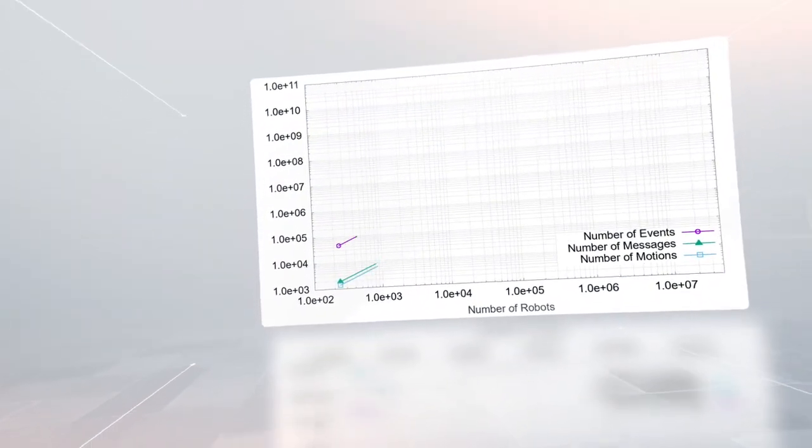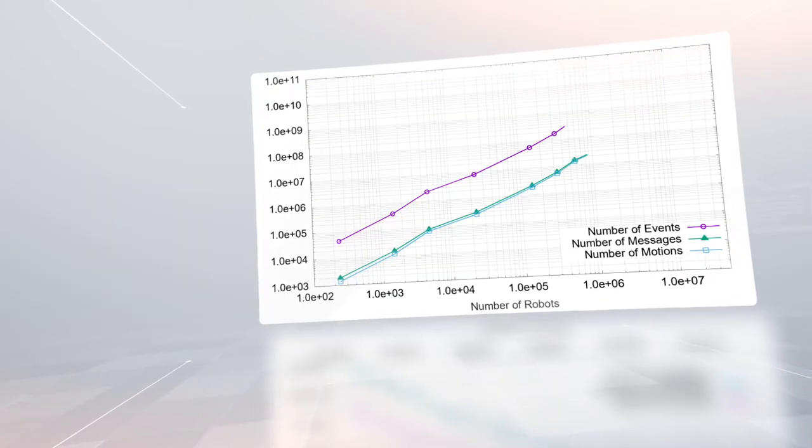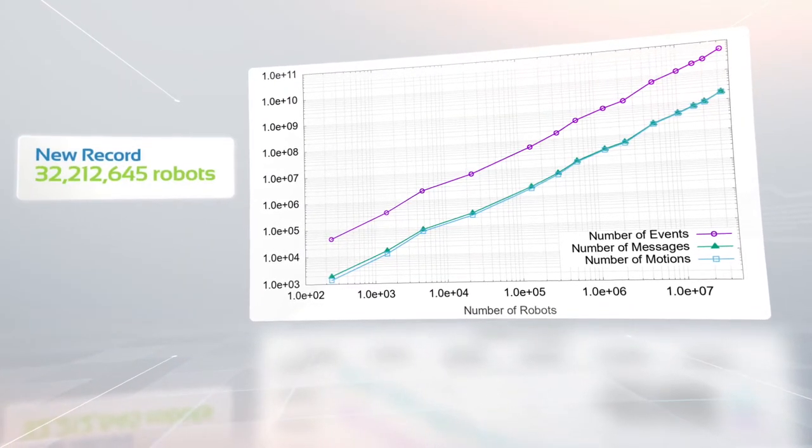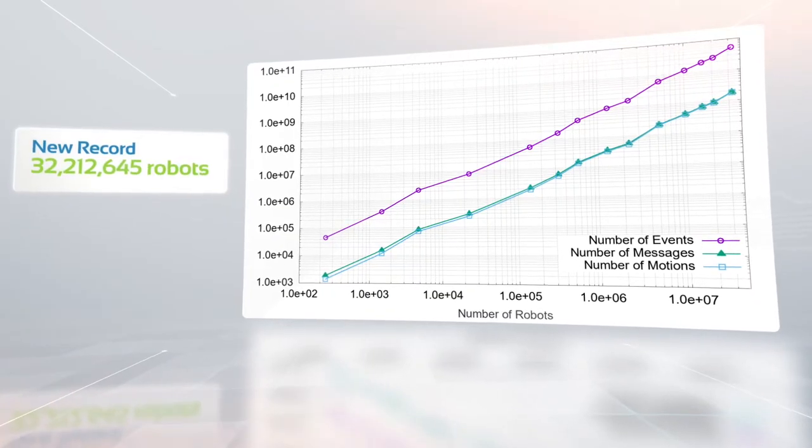VisibleSim has been able to simulate up to 32 million robots, which is the highest number of moving robots ever simulated. This sets a new record.